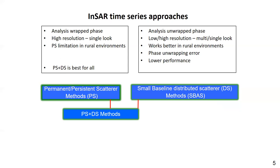However, the PS density is often limited when we go outside the city, leading to a sparse distribution of useful points in processing. To overcome this, the recent combined technique allows us to combine both PS and DS in the calculation, to avoid the sparseness of measurement points. This combined approach is an advanced technique that allows optimal density of measuring points and gives the highest accuracy.